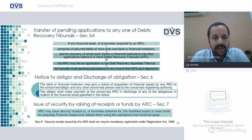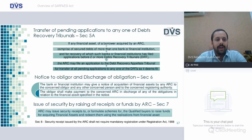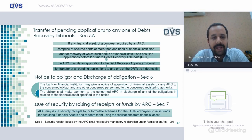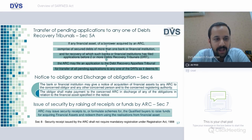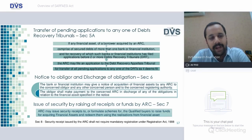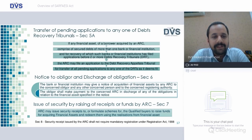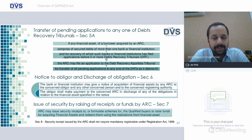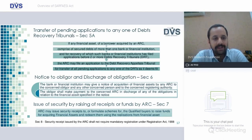Section 6 speaks about notice to obligor and discharge of obligation. The bank or financial institution may give a notice of acquisition of a financial asset by any ARC to the concerned obligor and any other concerned person and to the concerned registrant authority. The obligor shall make payment to the concerned ARC in discharge of any obligation in relation to the financial assets specified in the notice. Section 7 speaks about issue of security receipts or raising of funds by the ARC — ARC may issue security receipts or formulate schemes for qualified buyers to raise funds for acquiring financial assets and redeem them using realizations from financial assets.